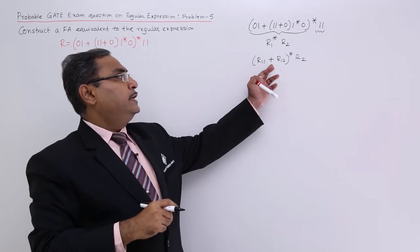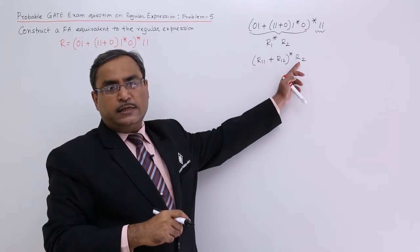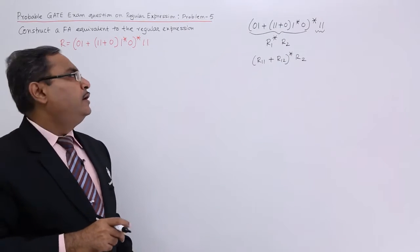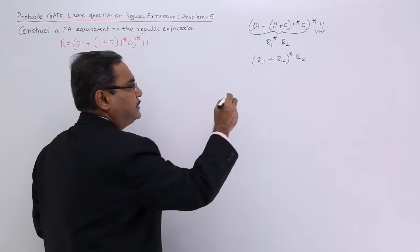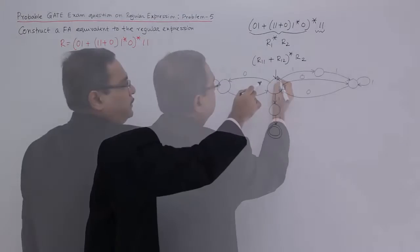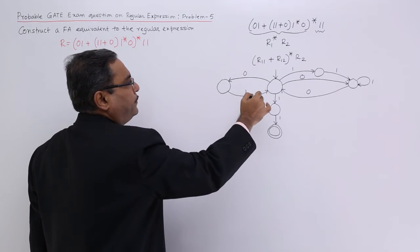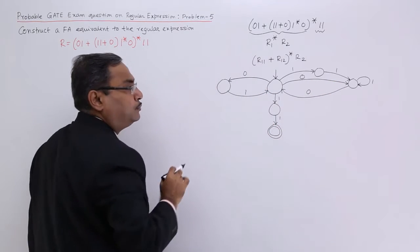That means we are having this whole thing whole full thing whole star and then we are having this r2. Let me draw the respective transition system for this particular regular expression. This is my r1 1, this is my r1 2, and this is my r2.